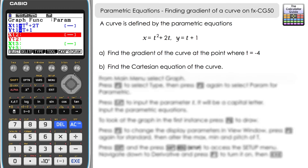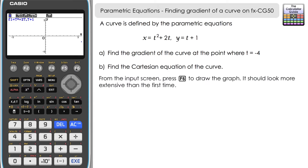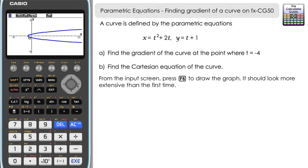Press execute, then F6 to draw the graph again. The graph now looks more extensive than the first time — we had only a segment of the curve before, but now we've got more displayed including a negative portion. Navigate right to see more of the graph, since we set the x-axis to minus 10 to 10 but had a lot of space on the left.